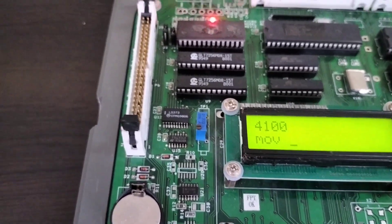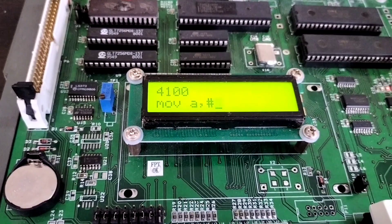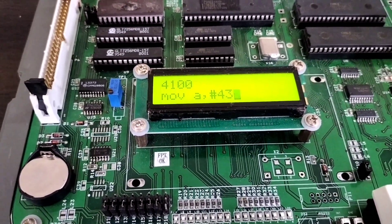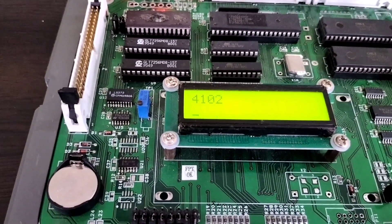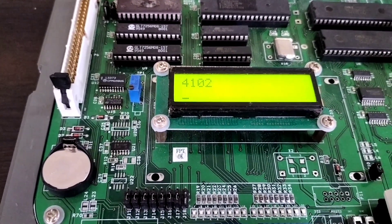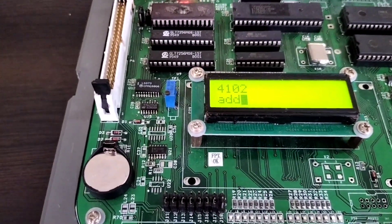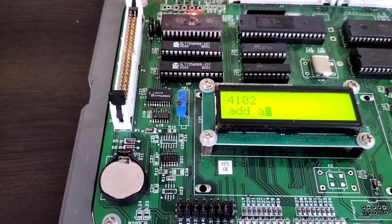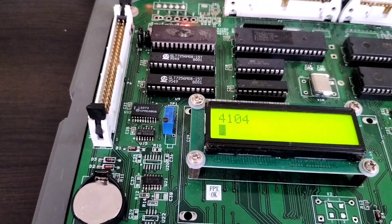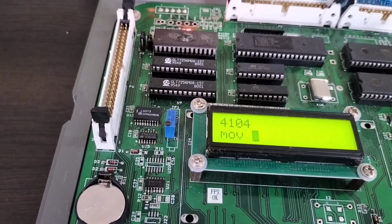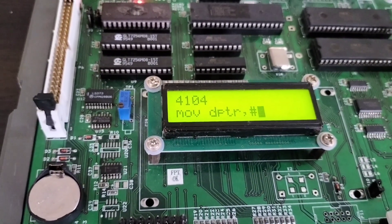So give MOV A, # symbol. So our first value is 43. So you can either give 43 as it is or you can use H also. It is your wish. And then it will automatically point out to the next location. So the next location we have to give the next instruction. So ADD A, #21H. Moving to the next instruction. MOV DPTR, #. So give the value 4200.